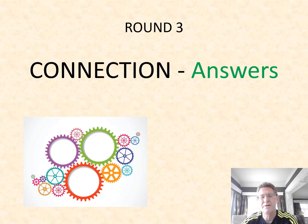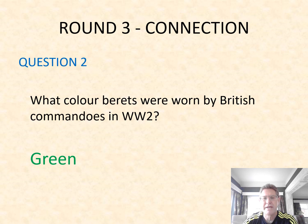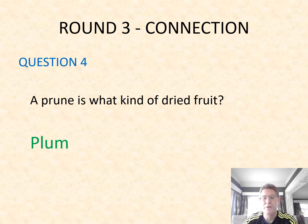Round three — the connection round. Question one: what is the surname of Jerry who had four children with Mick Jagger? It's Hall — she was Jerry Hall. Number two: what colour berets were worn by British commandos in World War Two? They were green — the green beret. Number three: what game is played on a snooker table but with only three balls? That's billiards. Number four: a prune is what kind of dried fruit? It's a dried plum.